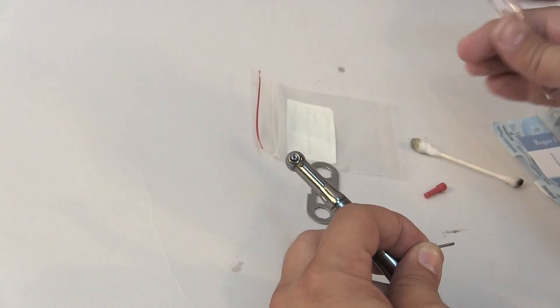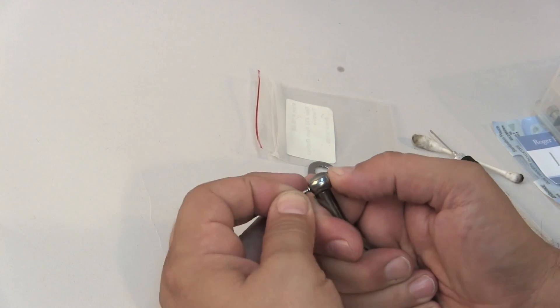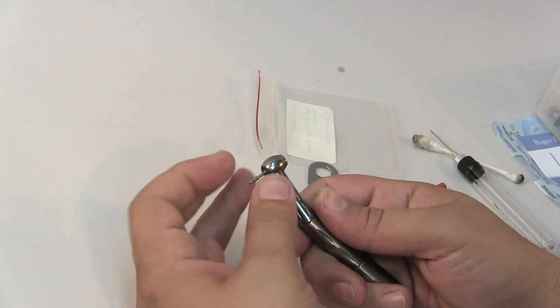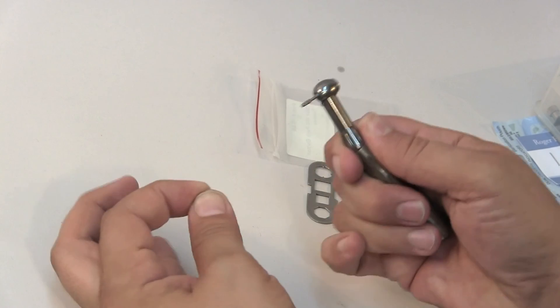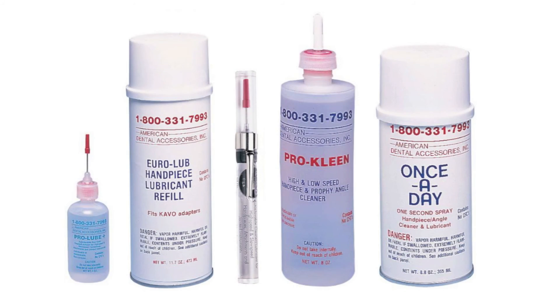It's also important to note that with lube-free turbines, the bearings are sealed so they will not require lubrication. However, debris can still enter the turbine cavity and interfere with the turbine components. We recommend using a handpiece cleaner to flush the handpiece after each use.